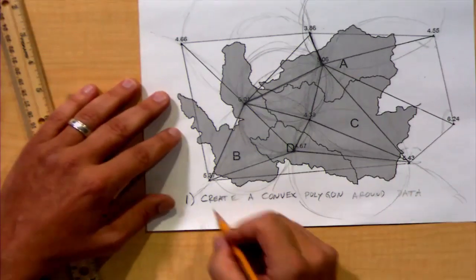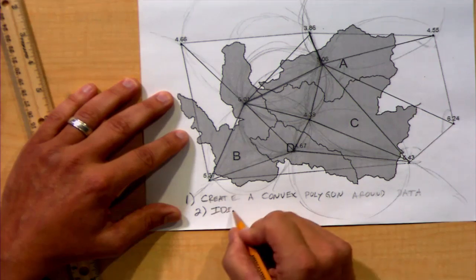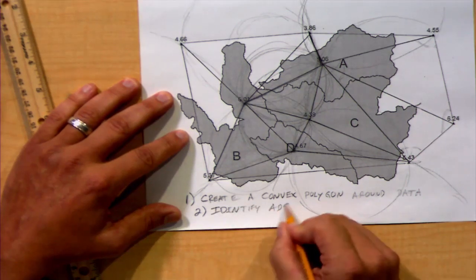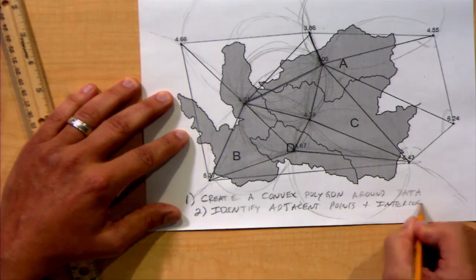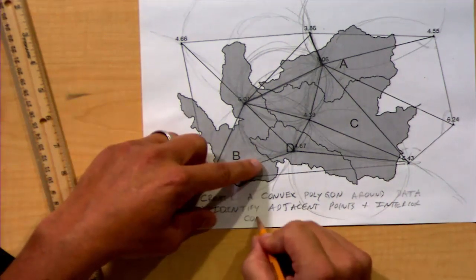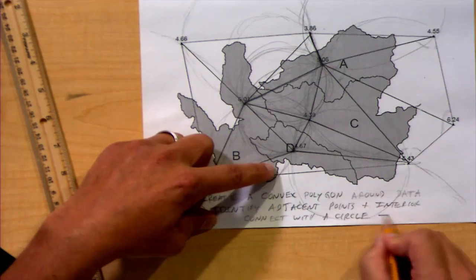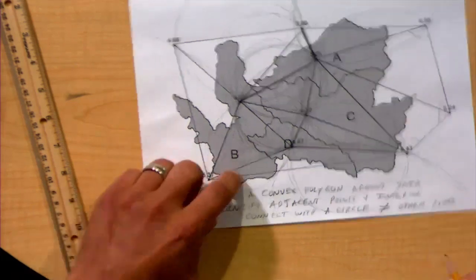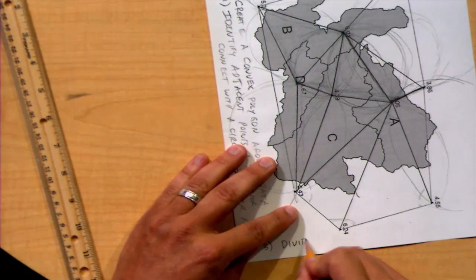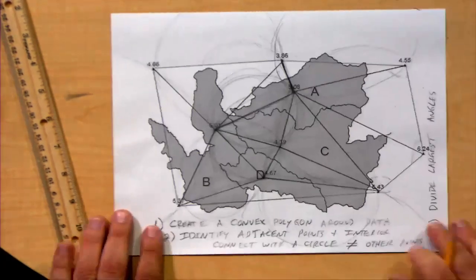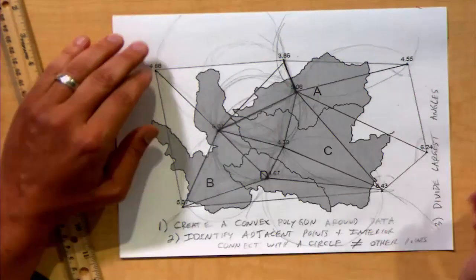So again, you start by creating a convex polygon around the data. You identify adjacent points plus an interior point and make sure you can connect with a circle that contains no other points. And the third point that I like to make here is, when unsure, divide largest angles. And with that process, you should have created a Delaunay triangulation.